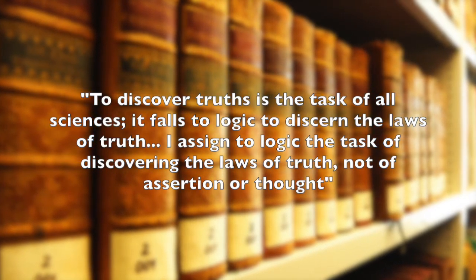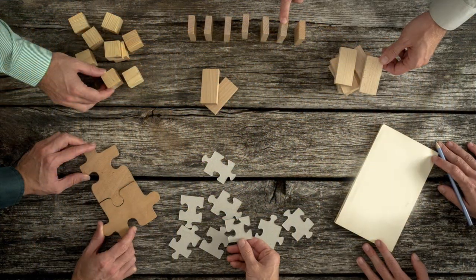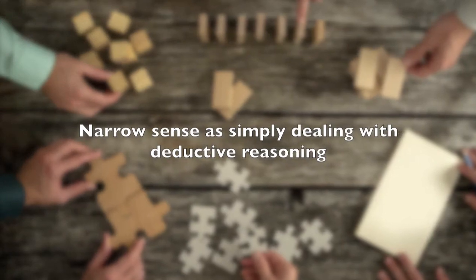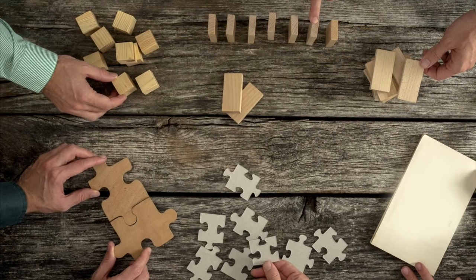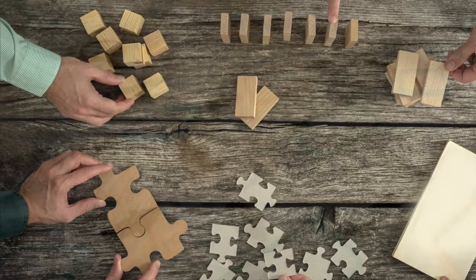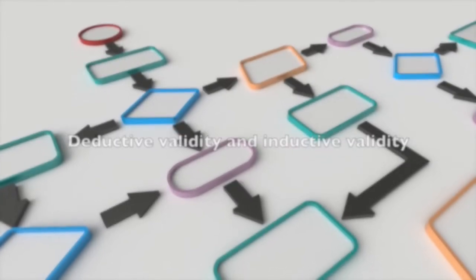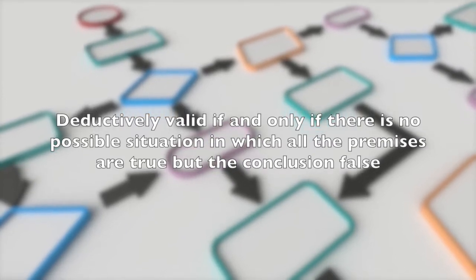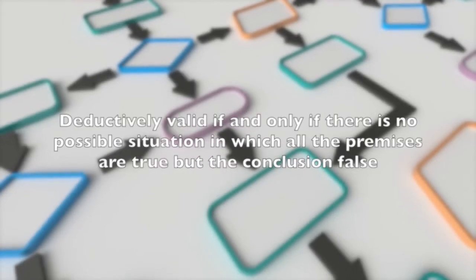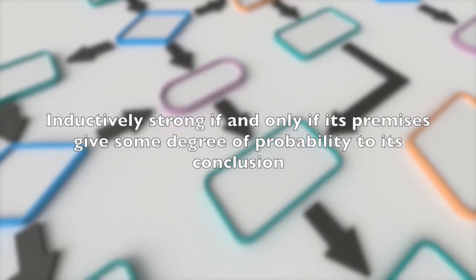Frege assigned to logic the task of discovering the laws of truth, not of assertion or thought. How logic should be properly defined is a somewhat controversial matter. For some, it is interpreted in a narrow sense as simply dealing with deductive reasoning. Such a narrow conception controversially excludes much of what is called informal logic and processes of inductive reasoning. It is important to distinguish deductive validity and inductive validity: an inference is deductively valid if and only if there is no possible situation in which all the premises are true but the conclusion is false. An inference is inductively strong if and only if its premises give some degree of probability to its conclusion.